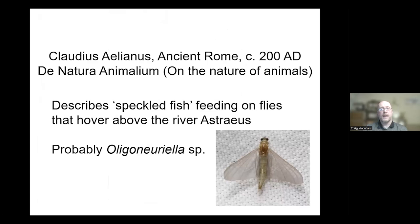Bringing it forward again to 200 AD, Claudius Salenus, a Roman poet, described speckled fish feeding on flies that hover above the river Astraeus. We have a good idea what this may be from the species in that river with the habit of hovering — a mass emergence of Oligoneuria species moving backwards and forwards up the river — so we can probably guess roughly what species this is.